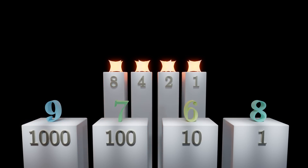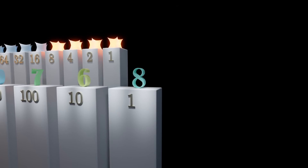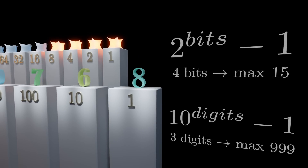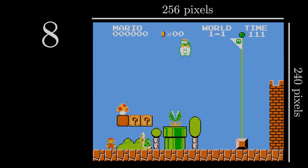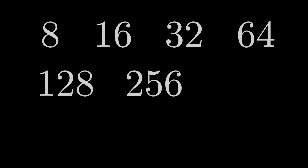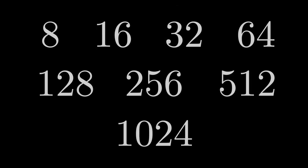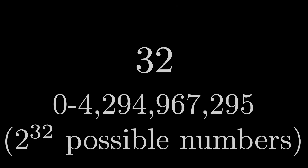Just like in the decimal system, we can extend this numbering system to however many bits we want. The maximum value we can store with a certain number of bits or digits follows these formulas. Computers often work with 8, 16, 32, and 64-bit numbers. 8-bit games are called 8-bit games because they ran on computers that could work with a maximum of 8 bits at once. If you get into cryptography, you may also see 128, 256, and 512-bit numbers. Researchers have also recently found 1024-bit numbers to be very useful when measuring the time since I last uploaded. Most commonly you'll see 32-bit numbers, as these go up to 4 billion, which is sufficient for most needs.